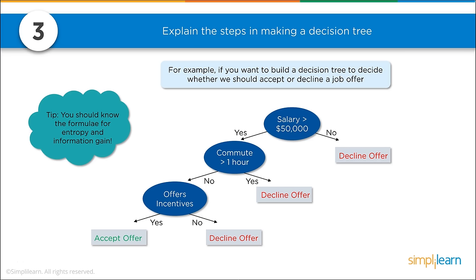You can see a visual of a decision tree here. For example, to decide whether to accept or decline a job offer: if the salary is greater than $50,000 — no, decline the offer; yes, good salary. Is the commute greater than an hour? Yes, decline the offer. No — does it offer incentives? Yes, accept the offer. No incentives, decline the offer. You should be aware of the formulas for entropy and information gain.